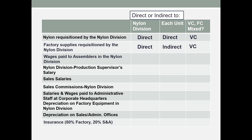Wages paid to assemblers in the nylon division: since they work in the nylon division, it would be direct to that division. Generally speaking, this is a direct labor cost, and we will assume it can be traced to each unit, so it's direct to each unit. Wages are considered a variable cost since they vary with the number of hours worked.